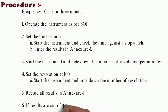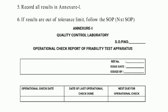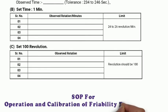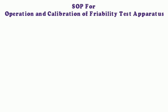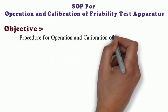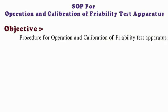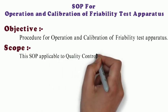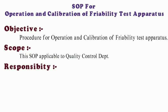Set the revolution at 100, start the instrument and note down the number of revolutions. Record all results in Excel. If results are out of tolerance limits, follow the SOP for operation and calibration of friability. Objective: to lay down the procedure for operation and calibration of friability test apparatus. Scope: this SOP shall be applicable to quality control department.